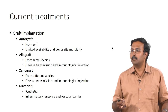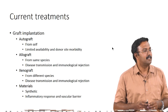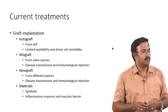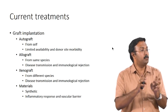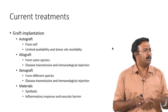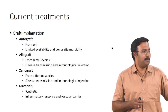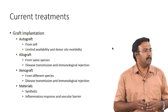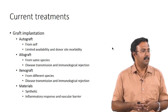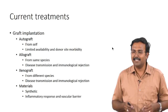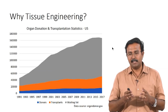Then why do tissue engineering? Maybe it is the best chance for us to mimic the living cell condition in the body. An autograft would be the best option, but autografts may not always be available. An allograft from another human being has limited source availability. The major problem is illustrated by statistics from the US showing the widening gap between those needing transplants and those who can receive them.